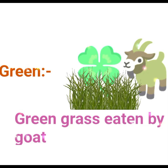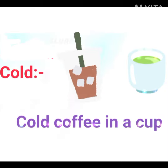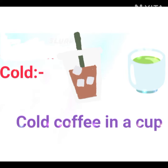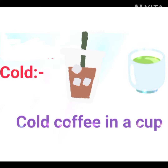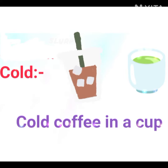Now make the sentence: 'Green grass eaten by goat.' Next word is 'cold' — C for cold. Use the words with sound C: cold, coffee, cup. Sentence: 'Cold coffee in a cup.'